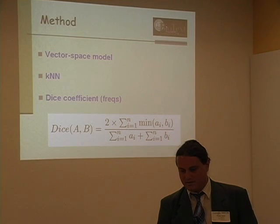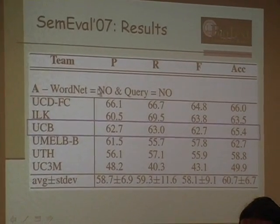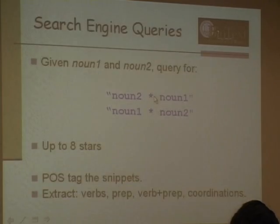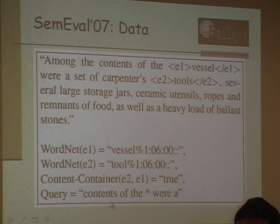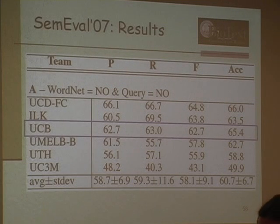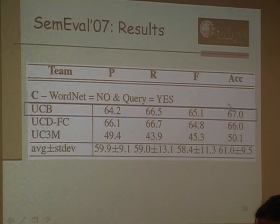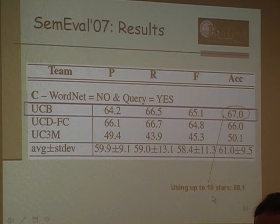Features include web features (verbs, prepositions, verb plus preposition, coordinating conjunctions) and context features (sentence words, entity words). Using a k-nearest neighbor classifier with the dice coefficient, my UCB system — without using the provided query or WordNet, which I consider an unrealistic assumption — achieves the second-best result using up to eight stars. With ten stars instead of eight, I get better results than the best system, though not statistically significantly. Using the query words as well gives the best system, with further improvement at ten stars.